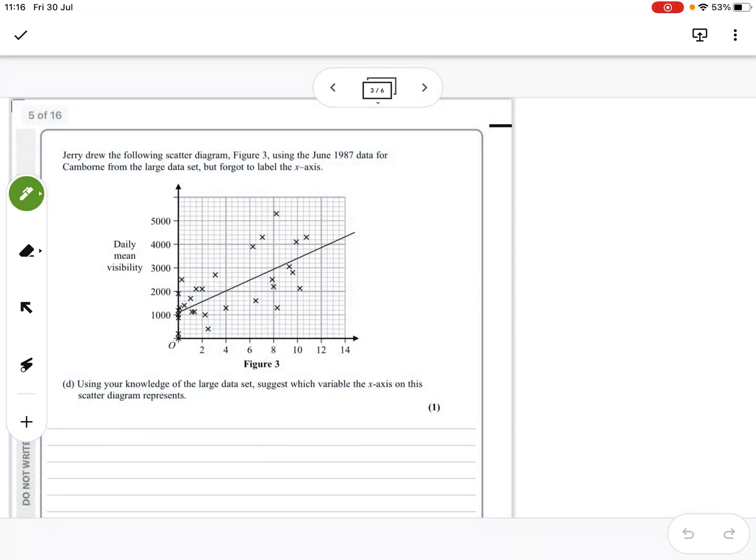Okay. Right, final question. Again, just one mark. Jerry drew the following scattergram, Figure 3, in June 1987 data from the large data set but forgot to label the x-axis, so he hasn't labeled this. Using your knowledge of the large data set, suggest which variable the x-axis. Okay, so we've got mean visibility. We've got 0, 2, 4, 6, 8 going up to 14.